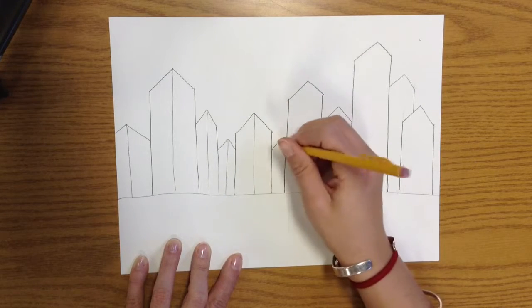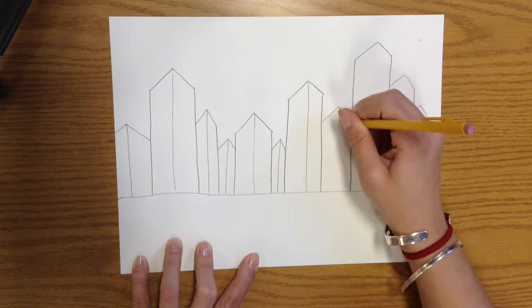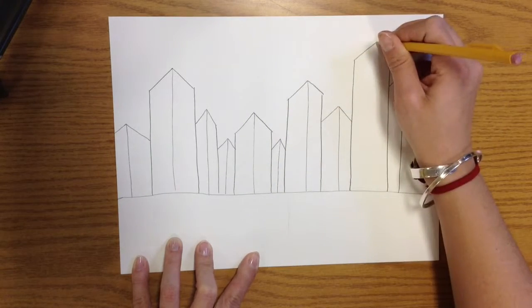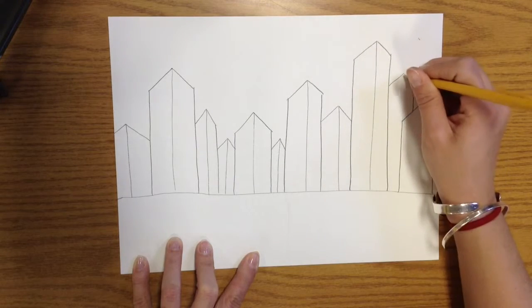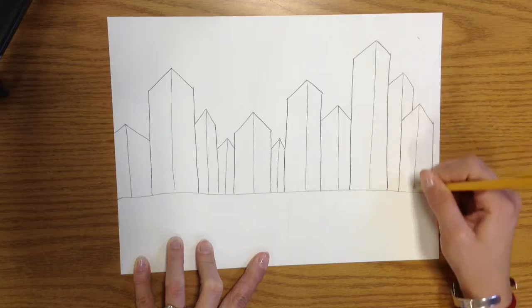Remember we're not using rulers and that's totally fine. They don't have to be perfect. They just need to be wide enough we can paint them. That one's going to end at the same place as here. And down.